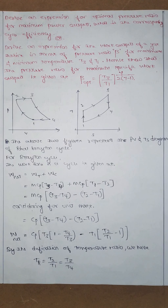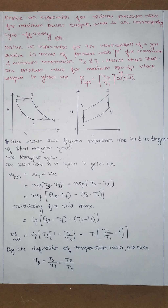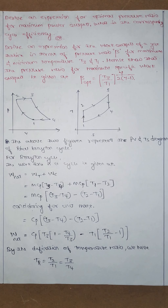Today we'll be discussing a derivation which asks us to derive an expression for the optimal pressure ratio for the maximum power output. This means what should be the optimal pressure ratio so that the power output from your gas turbine is maximum.